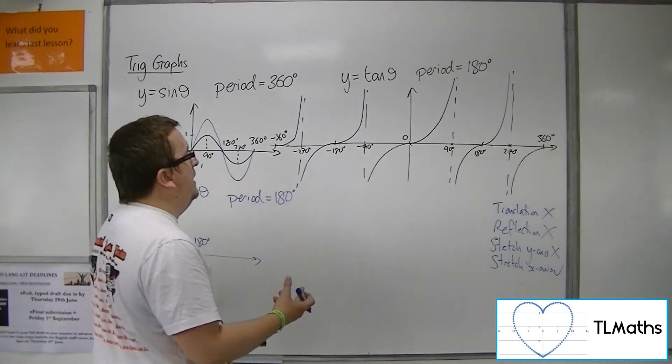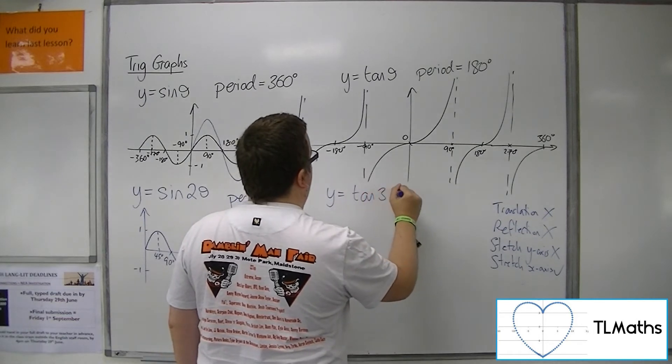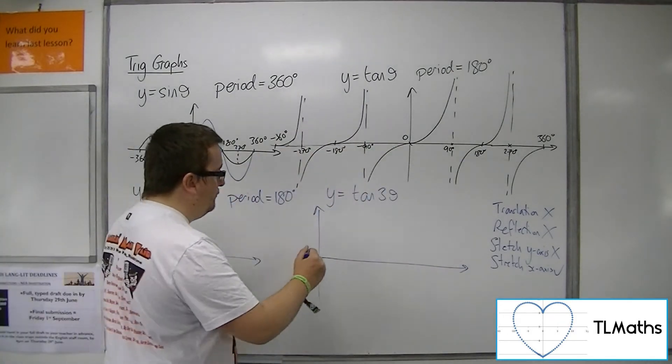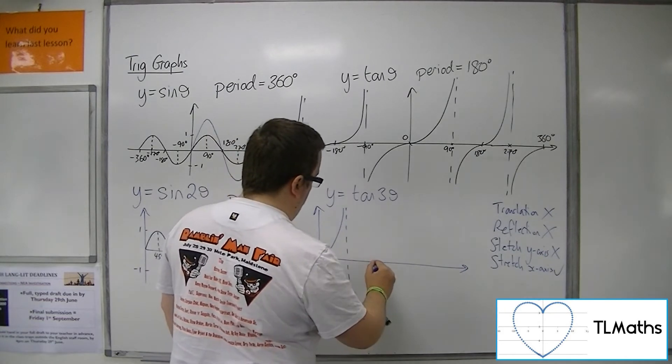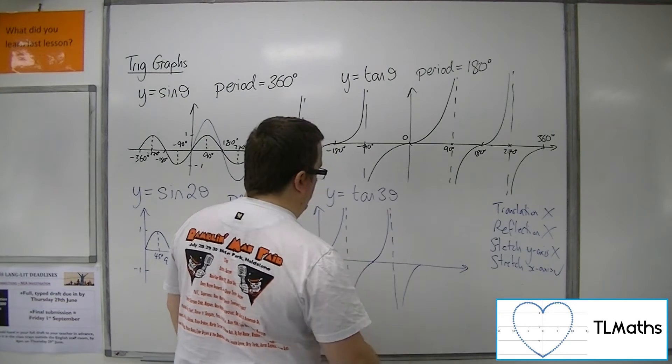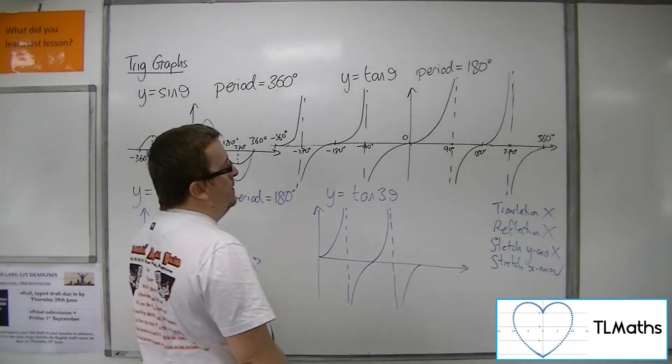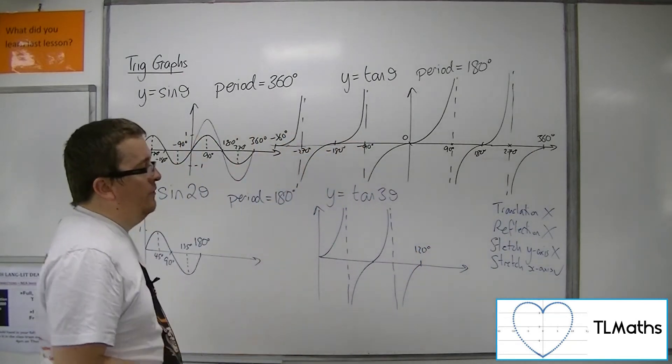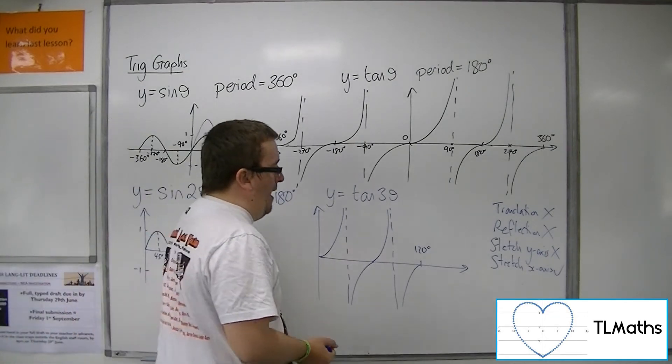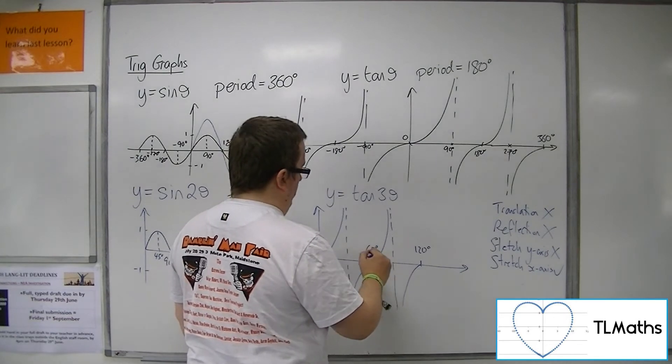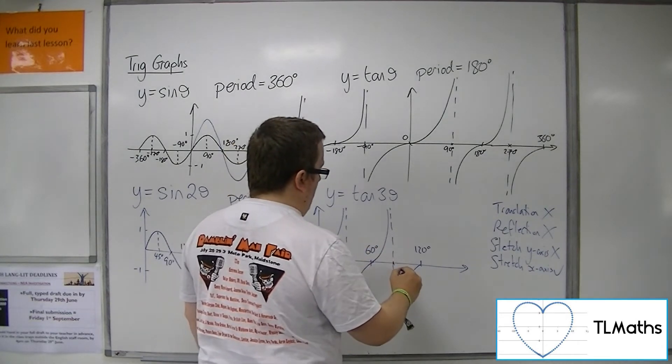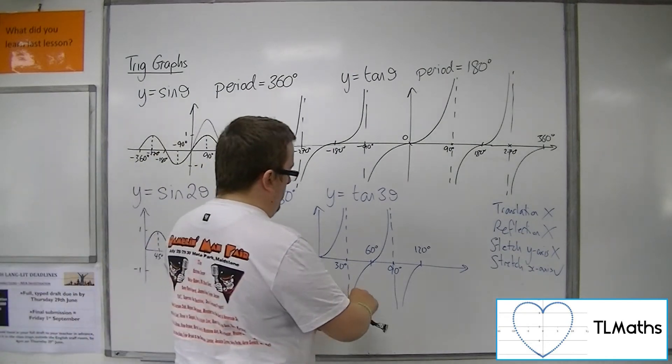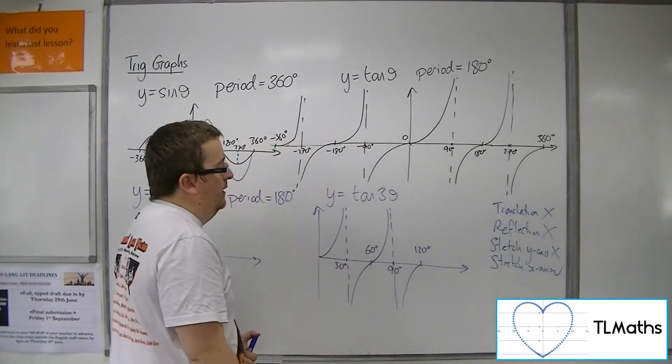So if I had y equals tan of 3 theta, if I just look at the part that's to the right of the y-axis, we'd still have a curve that looks something like that. But now, 0 to 360, well now it would be 0 to 120, wouldn't it? Because I've got a factor of 1 third stretched in the x-direction. So that would be 60 degrees. That would be 30. That would be 90. So the period of this function is now between 30 and 90, and so 60 degrees.